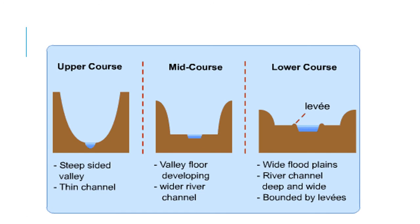These are the cross profiles for the upper, middle and lower course. In the upper course, we tend to have very steep-sided valleys and a very small, thin channel. In the middle course, the river is starting to get a little bit wider and is certainly carrying more water. The lower course is an exaggerated version of the middle course where the river is at its deepest and widest.